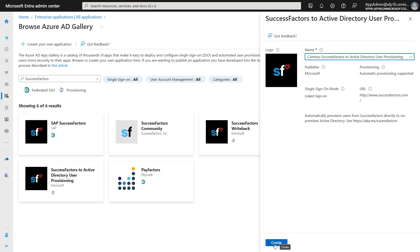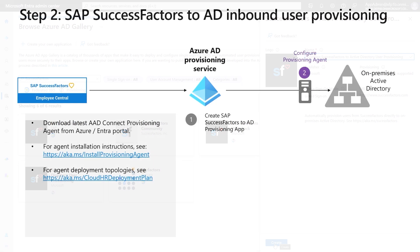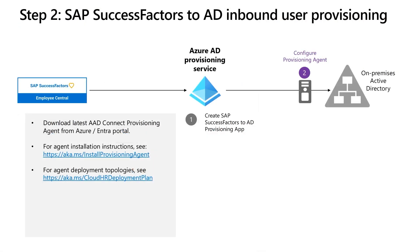That completes step number one of this process. Going to step two, in this step we will download and install the Azure AD Connect provisioning agent on a Windows server that has connectivity to the on-premises AD domain services. If you want to provision cloud-only users to Azure AD, you can skip this step and go directly to step three.